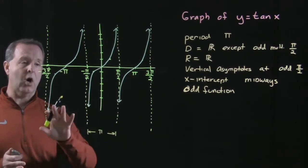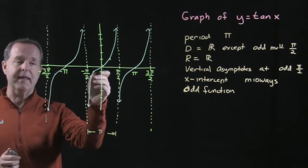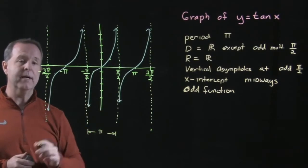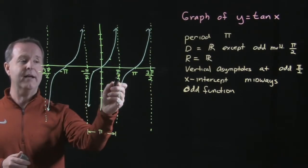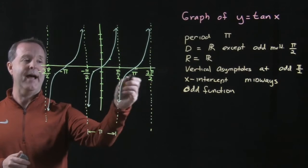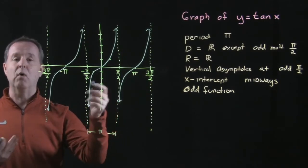The domain is all real numbers. Every number along the x axis will produce a tangent value except for the odd values of pi halves or for the odd multiples of pi halves.